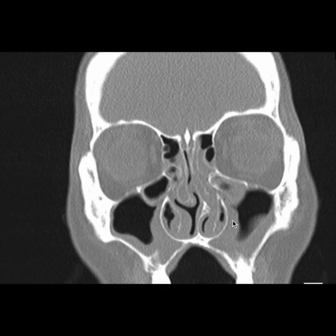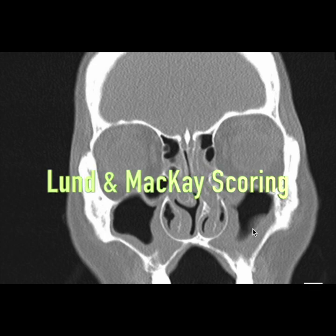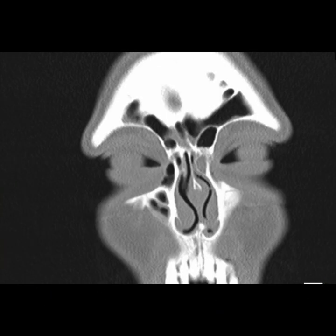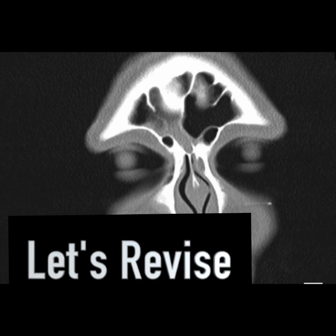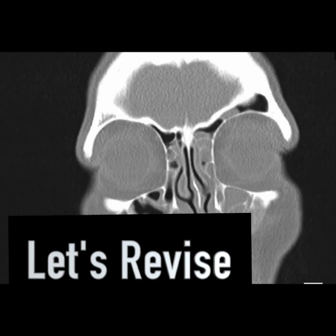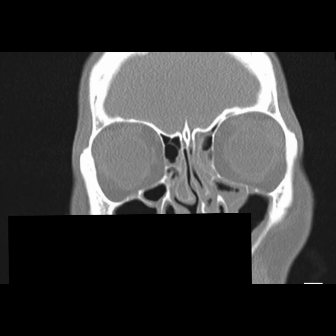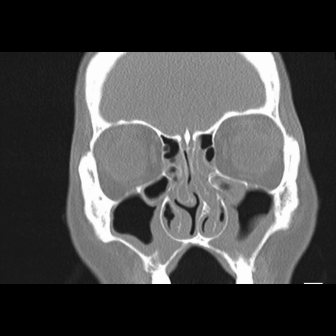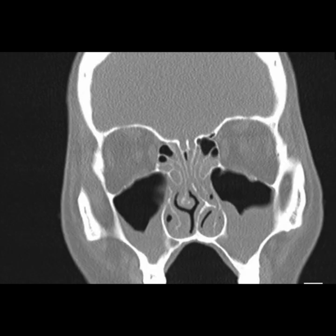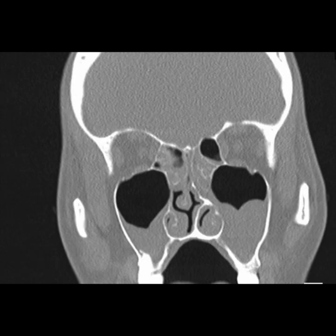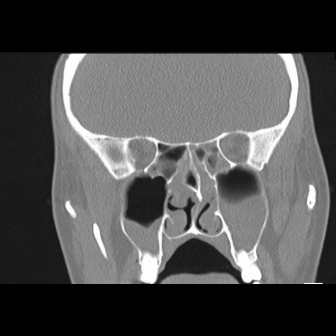The radiological features can be scored using the Lund-Mackay scoring system. It depends on how the sinuses are opacified and also accounts for the ostiomeatal complex involvement. Having a quick look at the scan again: going from the frontal sinus posteriorly, we have seen the agger nasi and frontal cells, then the Haller cell, then the deviated septum and concha, going all the way back into the posterior ethmoids and now the sphenoid.